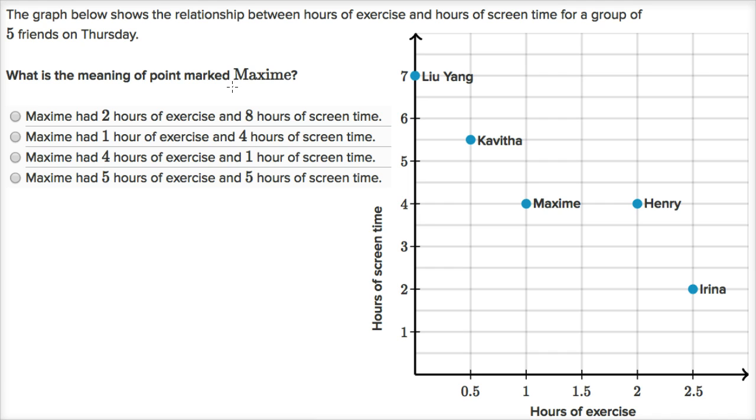What is the meaning of the point marked Maxime? I think that's how I would pronounce that. So Maxime is right over here, and it looks like this is the point one, because our horizontal coordinate right over here is one, and then our vertical coordinate is four, so point one comma four.